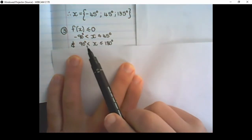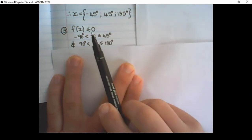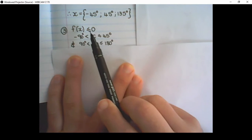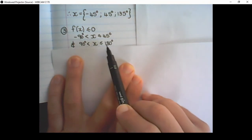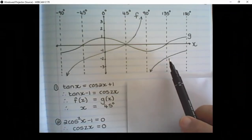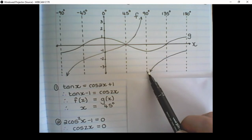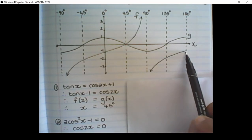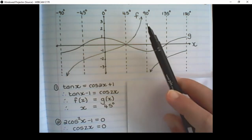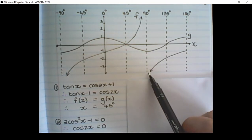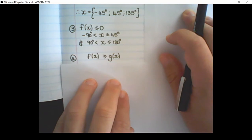There is a second part where the graph is also smaller or equal to 0, and that is from 90 degrees up until 180 degrees. So x can stand on 180 degrees because there is a valid solution, but x cannot be equal to 90 degrees, so it will not be included.